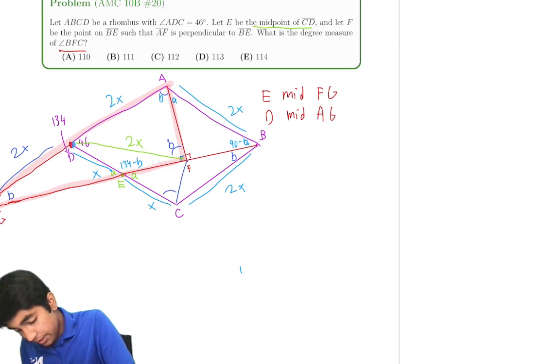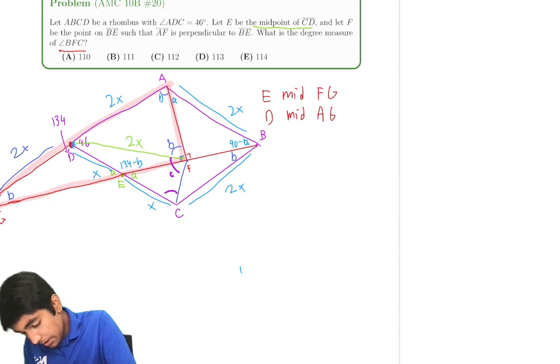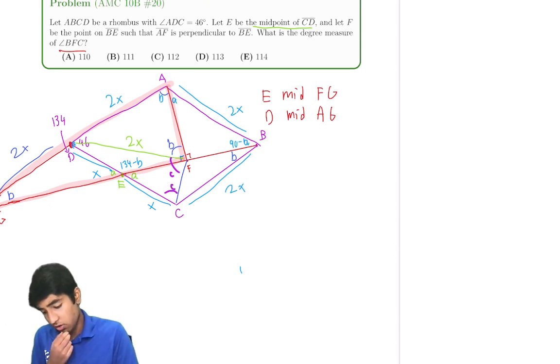So maybe if this is C and then this is, maybe I should make it a little more clear. Let's draw with a thicker color. So this angle is C and this angle is C. That's also true by isosceles triangles.